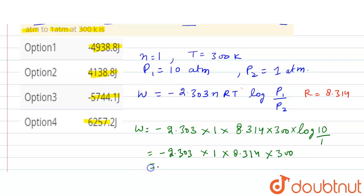So from here we get negative 5744.1 joules. So here option third is correct. So this is our solution for this question.